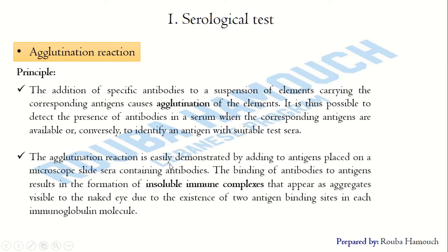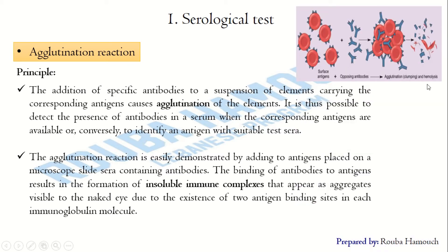The agglutination reaction is demonstrated by adding antigens placed on a slide to a serum containing antibodies, or by adding antigens to a test tube containing a serum that may have the corresponding antibody. The result is the formation of insoluble immune complexes that appear as aggregates visible to the naked eye, due to the existence of two antigen-binding sites on each immunoglobulin molecule. The antibodies agglutinate the red blood cells forming visible aggregates.